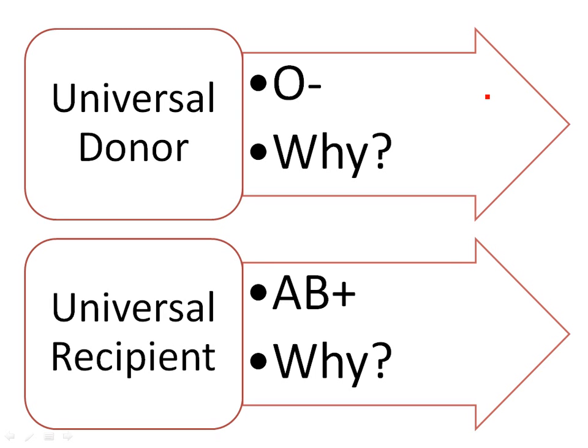An antigen is something that if your body says that doesn't belong in me, it will attack it. But your body can only say that if there's an antigen there — it's reading antigens. O negative blood has zero antigens on it, so there's nothing there to read. It's like generic; there's nothing to attack. So O negative is considered the universal donor because every blood type can receive O negative blood — there are no antigens to react against.